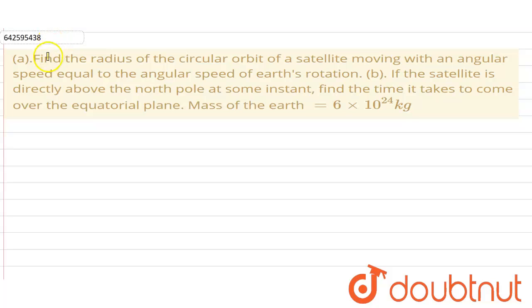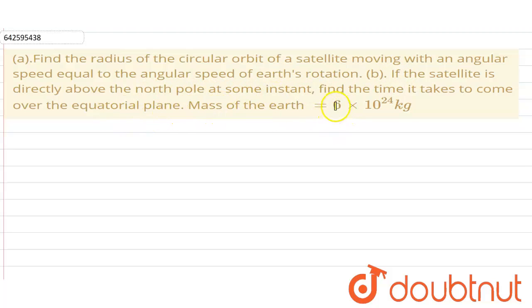Hello everyone. Our question is: find the radius of a circular orbit of a satellite moving with an angular speed equal to the angular speed of Earth's rotation. If the satellite is directly above the North Pole at some instant, find the time it takes to come over the equatorial plane. The mass of Earth given to us is 6×10²⁴ kg.